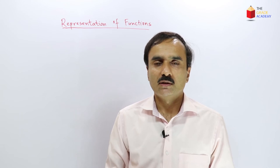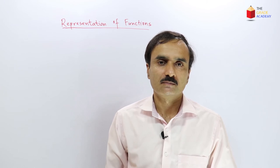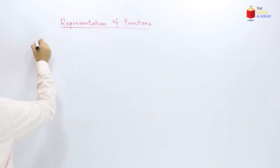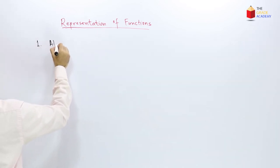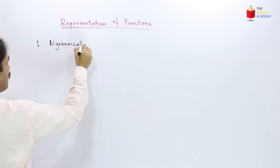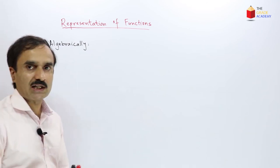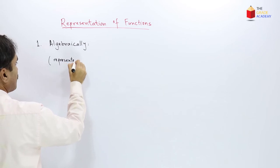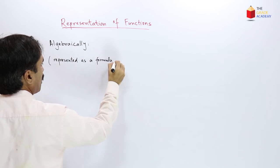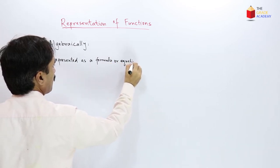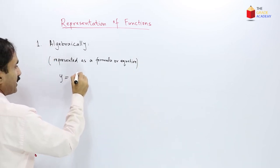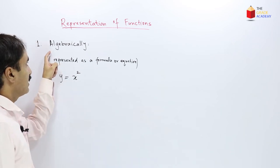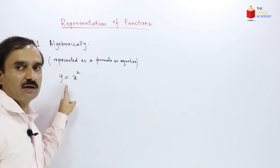Now let's talk about the various ways in which functions can be expressed. A function can be represented in three ways. Number one: a function can be expressed algebraically, meaning it is represented as a formula or equation. For example, y equals x squared is a relation which shows y as a function of x. This way of writing is called the algebraic representation.